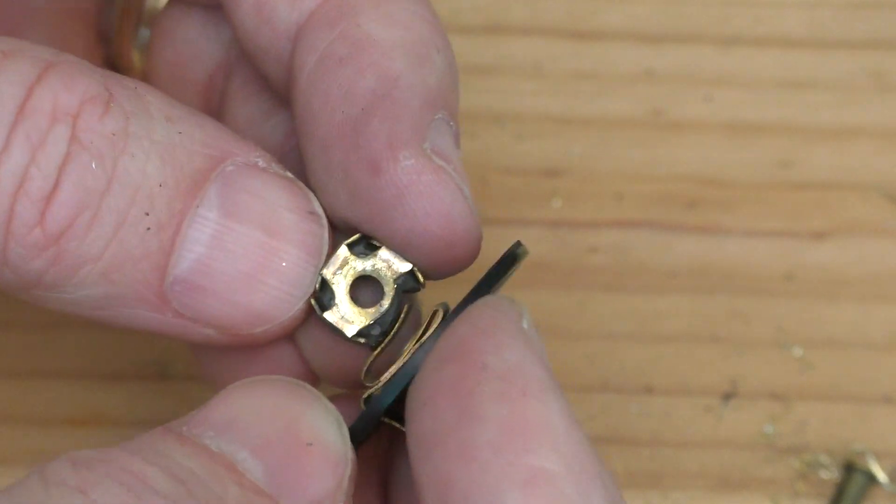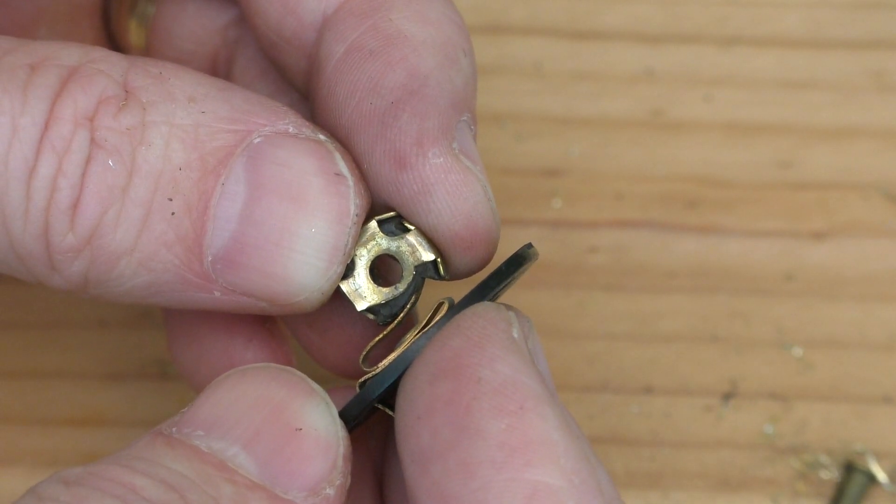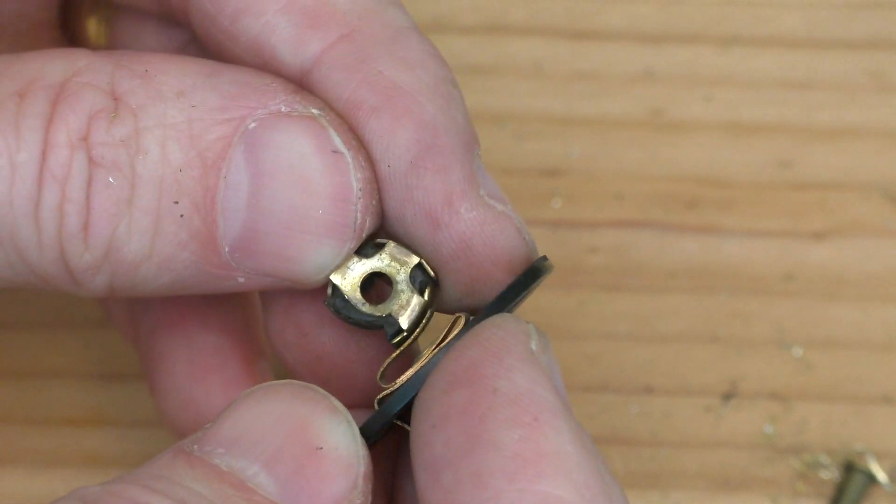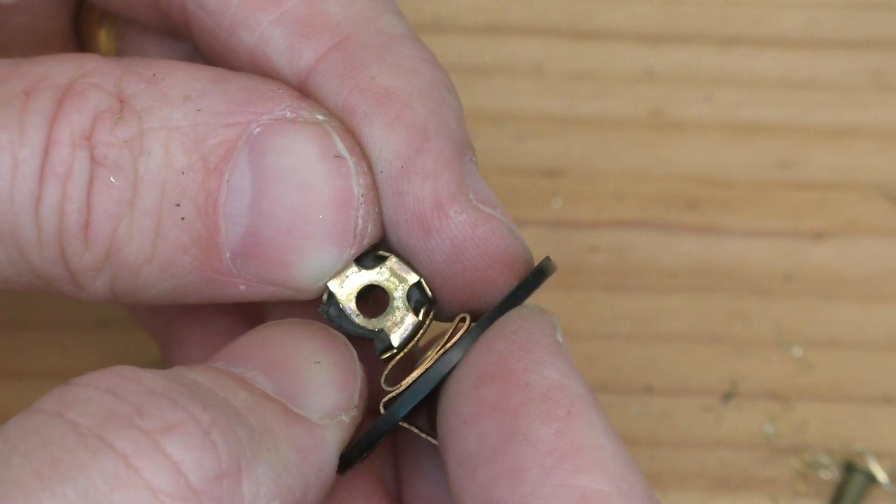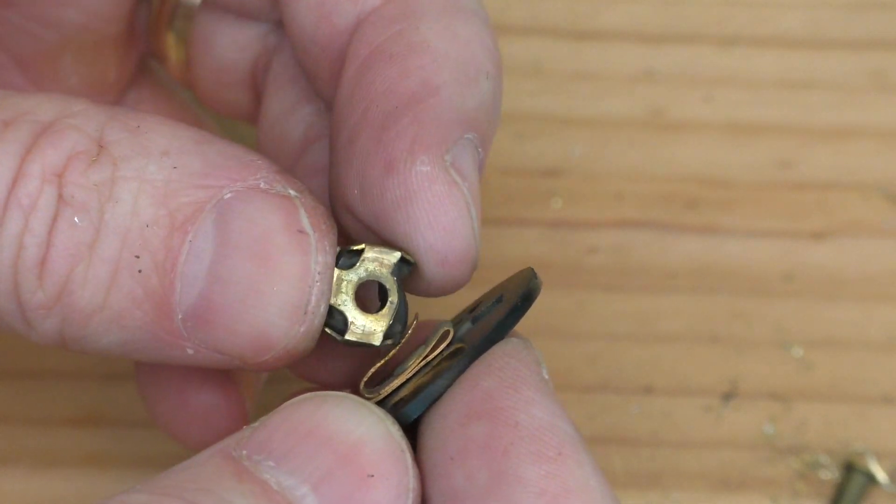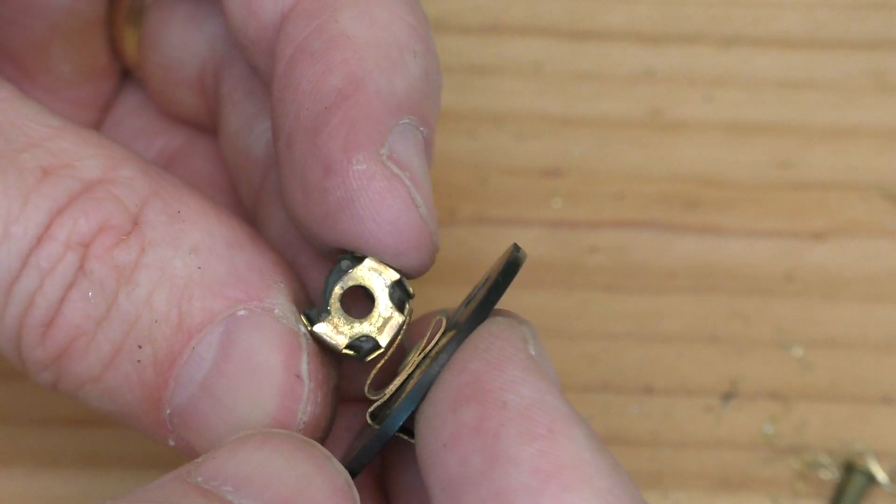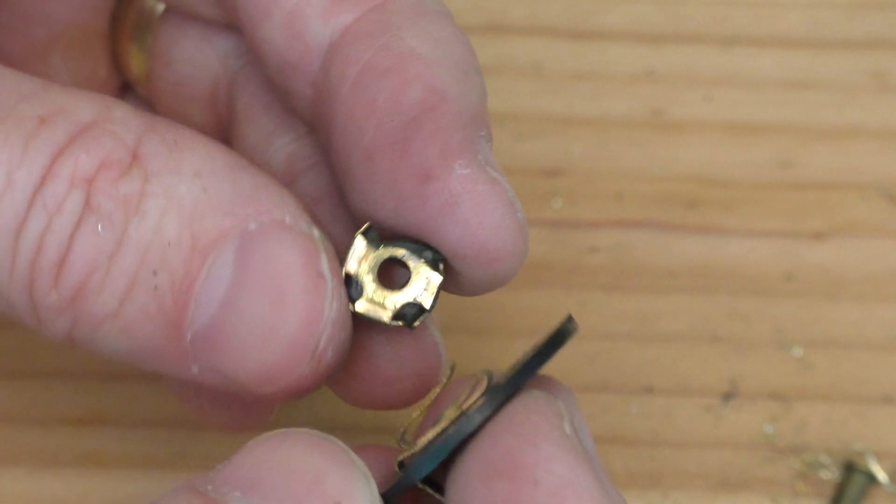And so in this one location, when either this is in contact like that, or this where the screw side is in contact, you don't get any power. So basically, when this spins in this position you get power, and in this position you get power. So that's how it works.